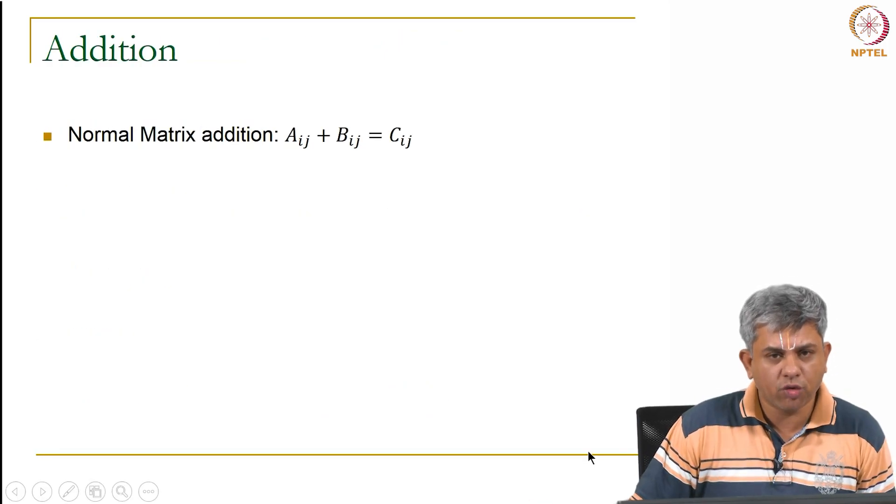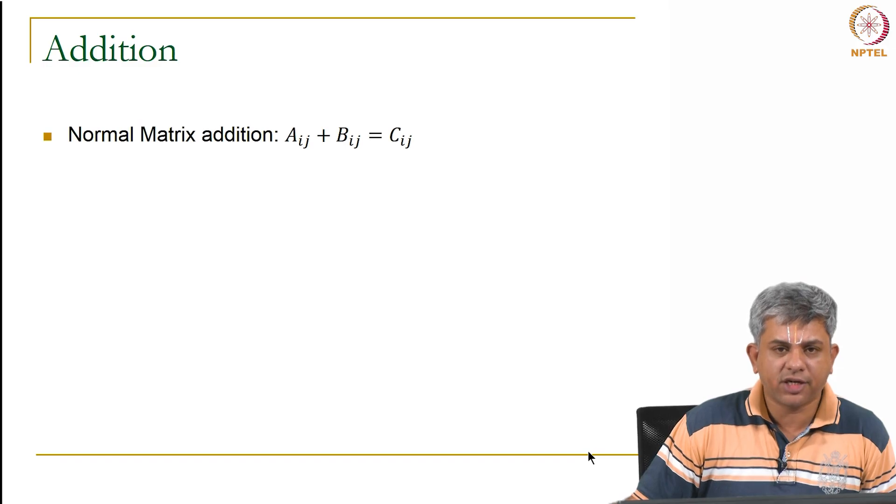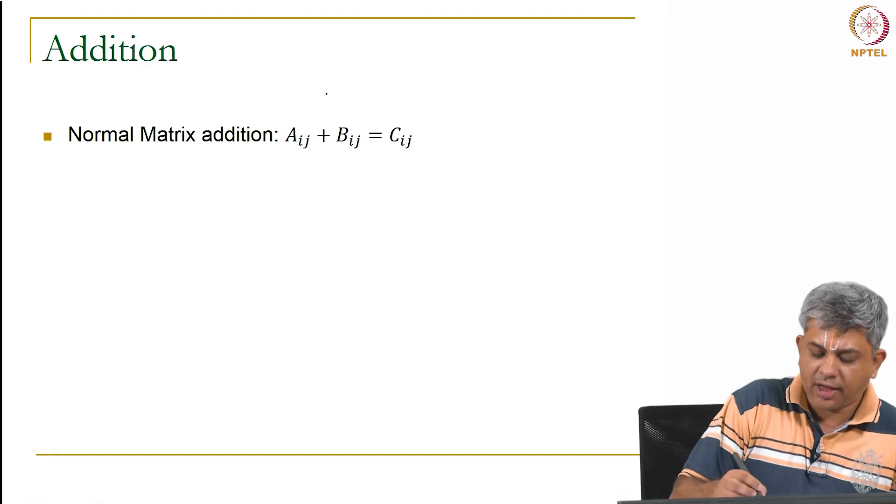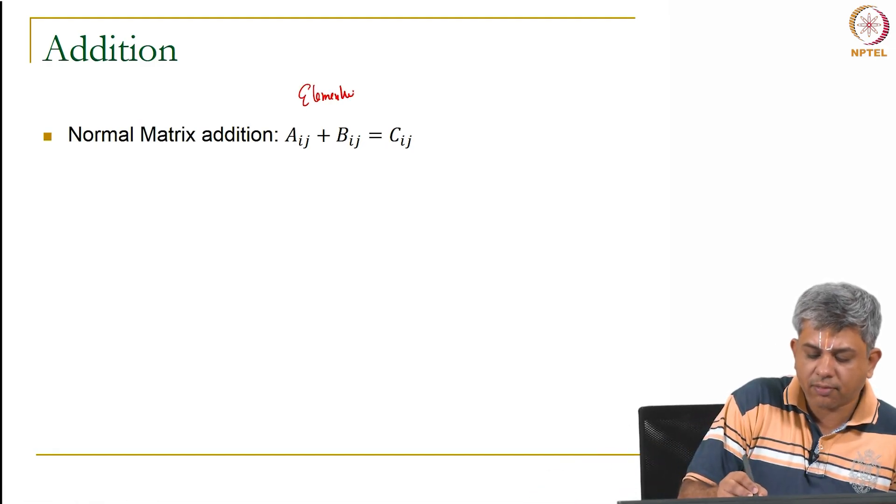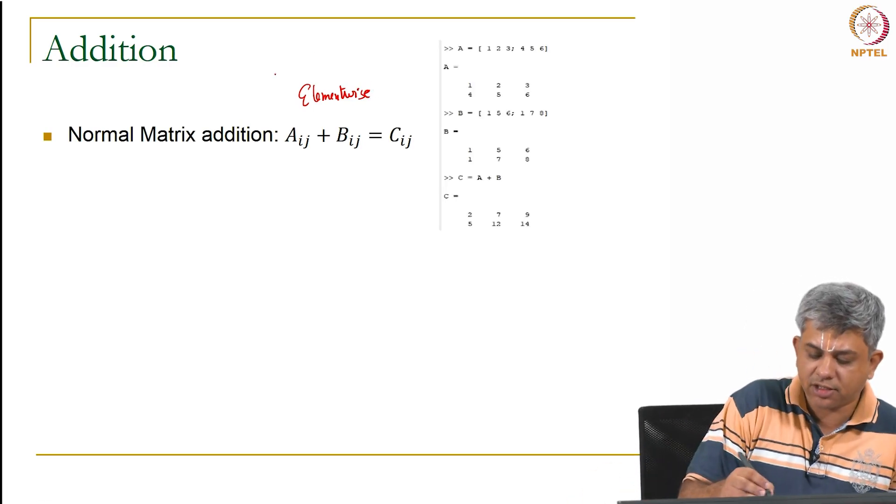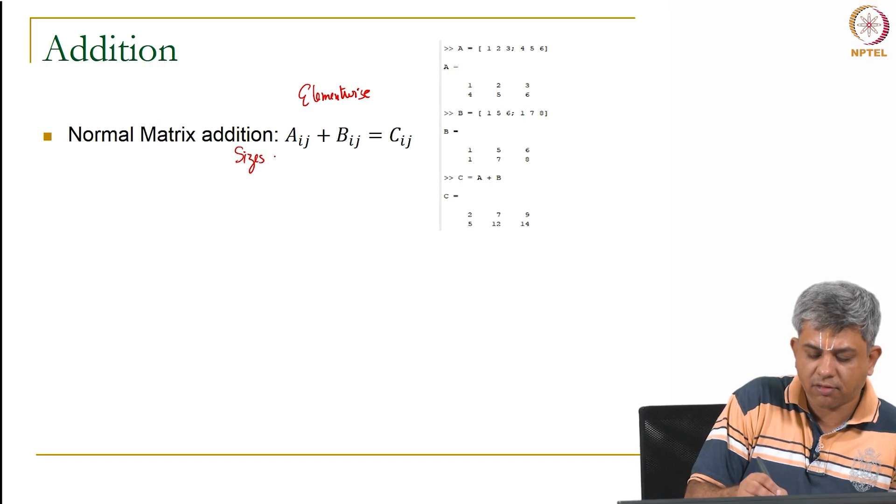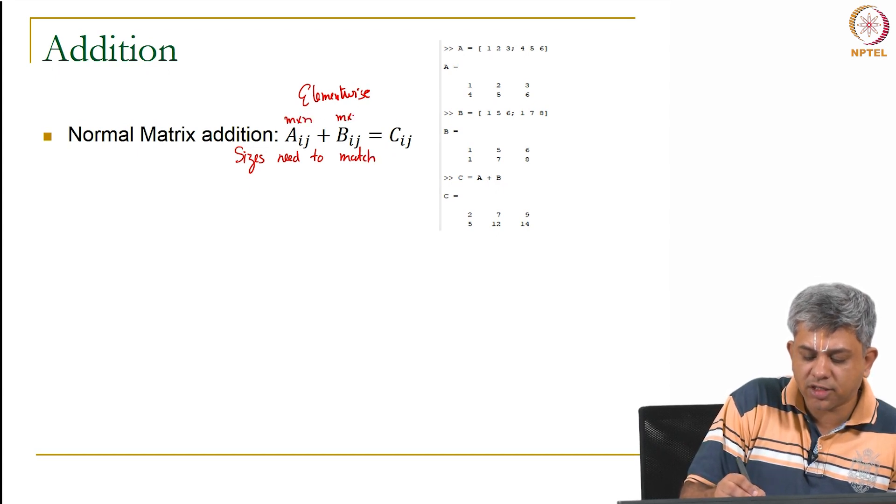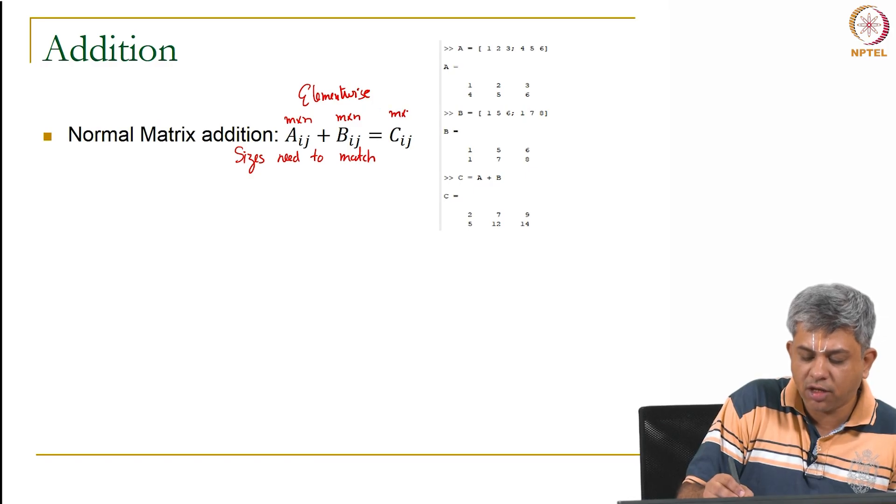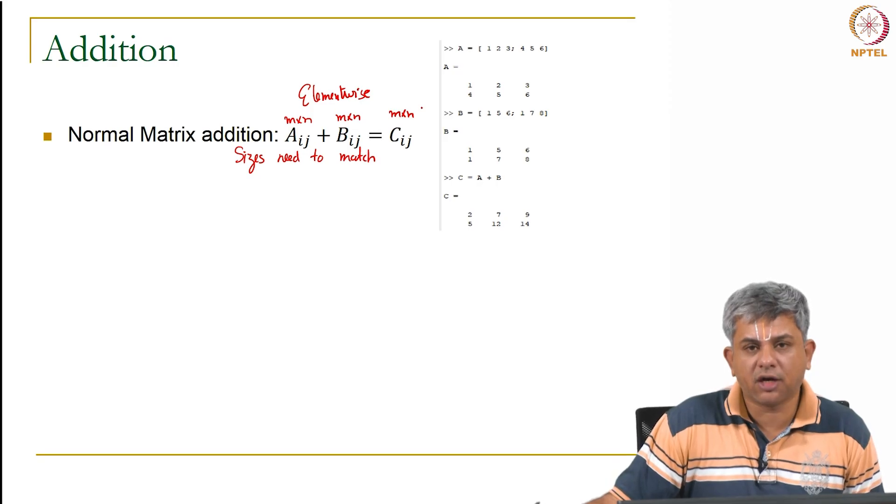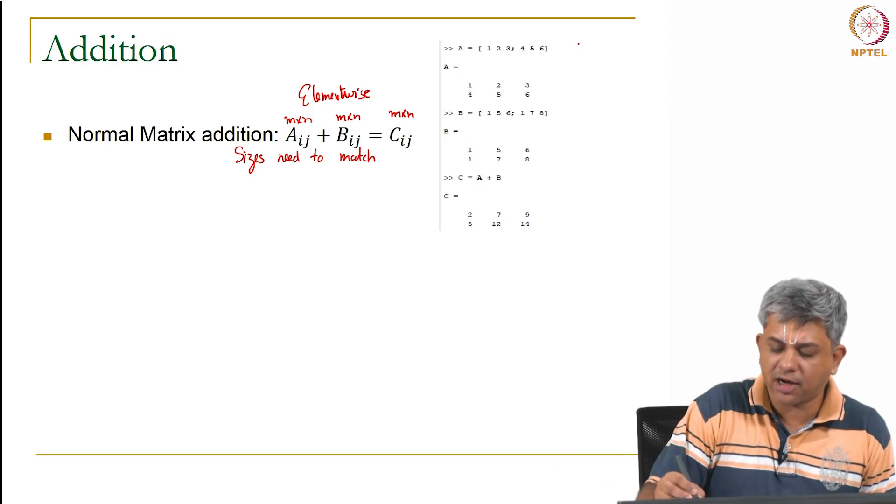Addition, as you know, a normal matrix addition is simply you take one matrix and you add the other matrix to it element wise. For this, of course, the sizes need to match. An example is shown on your screen, this is basically MATLAB output.